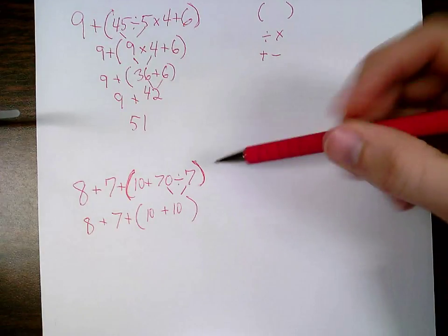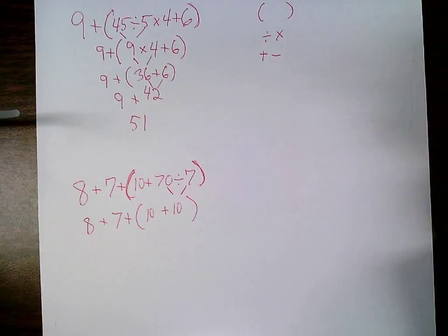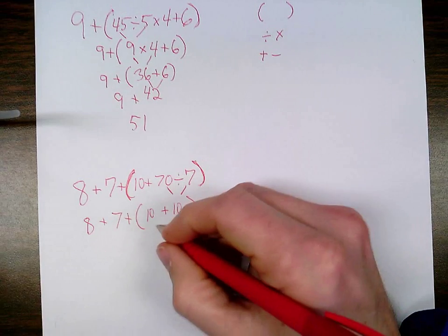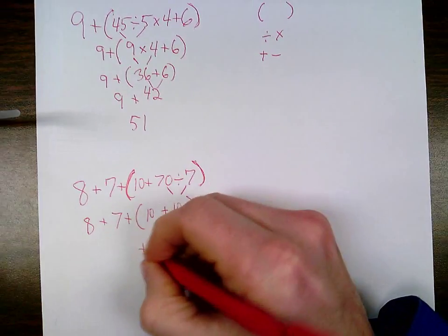After I'm done with my division and multiplication, I move on to addition and subtraction inside the parentheses. 10 plus 10 is 20, and bring down everything else.